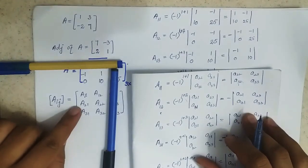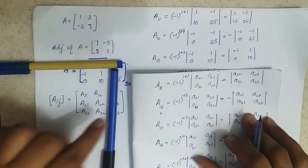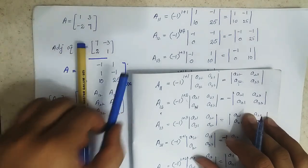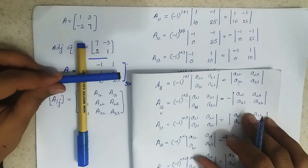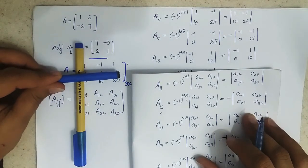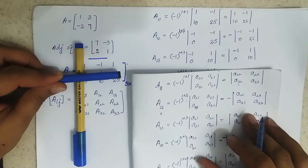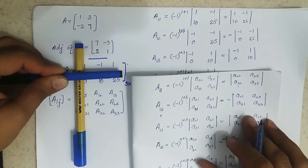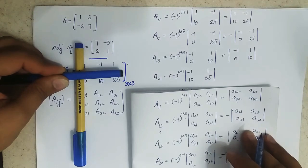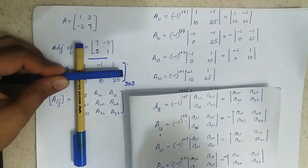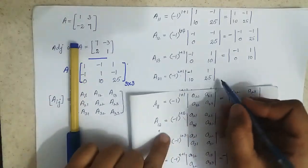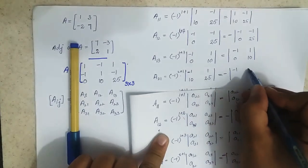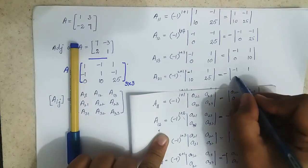For A21, we leave the first column and second row. The inside elements are minus 1, 1, 10, and 25. Since the power is odd, it will be equal to the negative of this determinant.